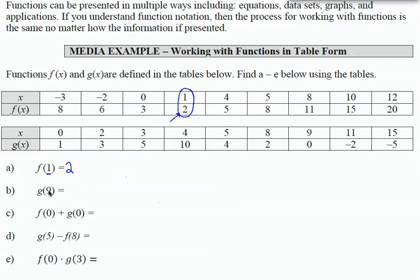g of 9, I'm going to scan my second table, which is my g function, and I'm looking for the ordered pair that has 9 as input, which is right here. My output is 0. So the ordered pair, 9 is input, 0 is output.